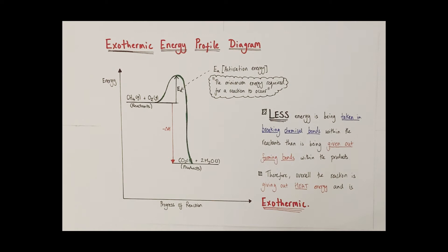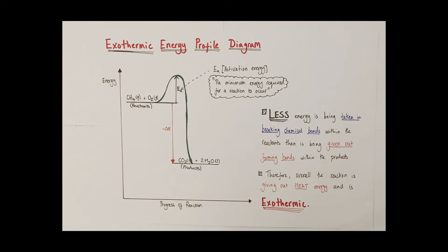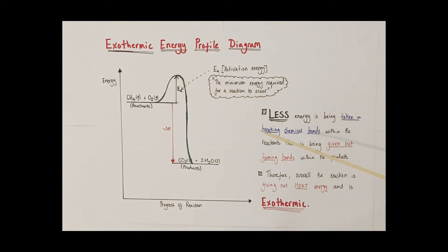Can we explain this diagram in terms of BENDOMEX? We can. What this diagram is implying is that less energy is being taken in breaking chemical bonds within the reactants than is being given out forming chemical bonds in the products. Therefore overall, more energy is being given out in the form of heat, making this overall reaction exothermic. So in any situation where less energy is taken in breaking bonds within the reactants than is given out forming bonds within the products, the overall reaction will be exothermic.